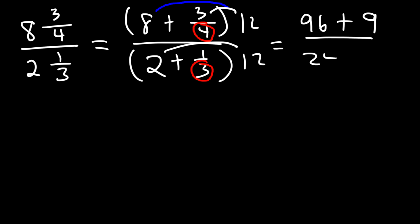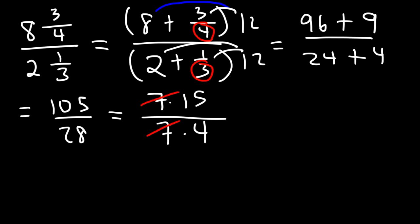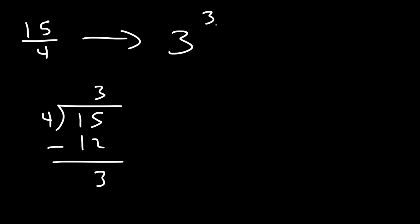On the bottom, 2 times 12 is 24, and 1/3 of 12 is 4. So we get 96 plus 9 equals 105 on top, and 24 plus 4 equals 28 on the bottom. Both 105 and 28 are divisible by 7: 105 is 7 times 15, and 28 is 7 times 4, giving us 15 over 4. Using long division, 4 goes into 15 three times with remainder 3, so this becomes 3 and 3/4 as a mixed number.